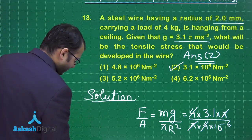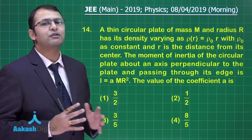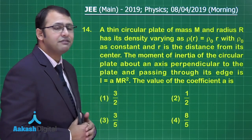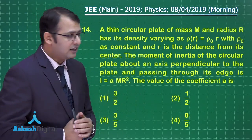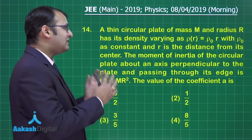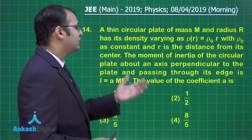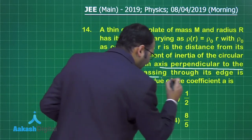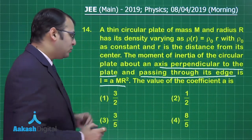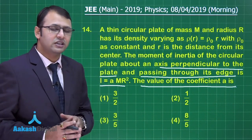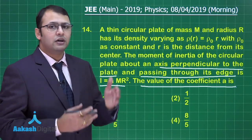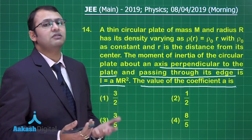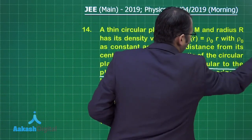Question 14 belongs to mechanics from the chapter on system of particles. A thin circular plate of mass M and radius R has density varying as ρ = ρ₀r, where ρ₀ is a constant and r is the distance from the center — so this is a variable mass distribution. We need the moment of inertia about an axis perpendicular to the plate and passing through its edge, given in the form aMR², and we must find the coefficient a.